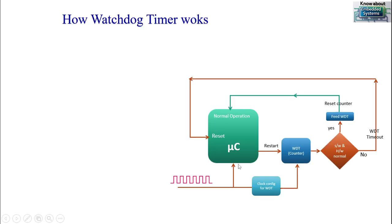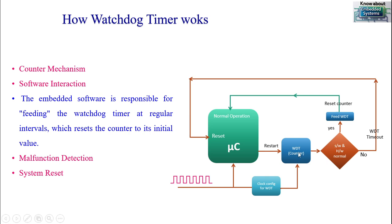Let us go to the block diagram of the watchdog timer to see how it works. The watchdog timer usually resides inside the microcontroller, but for understanding purposes I am showing it outside. Watchdog timer is fundamentally a down counter. We supply a clock to the microcontroller, configure the watchdog timer, and then the clock is supplied to the watchdog timer. The condition block here shows: if software and hardware both are normal, we have to reset the watchdog timer.